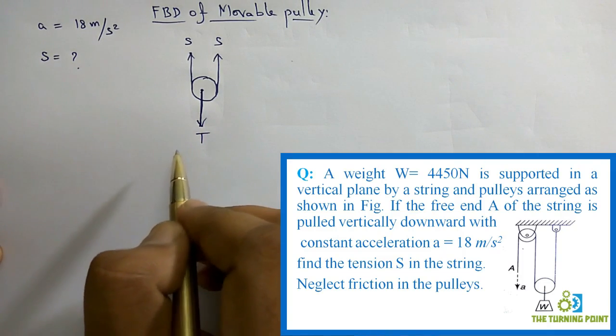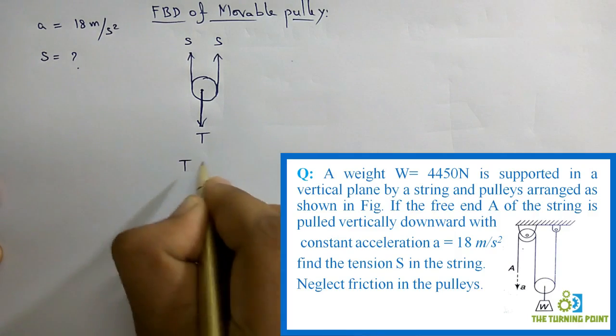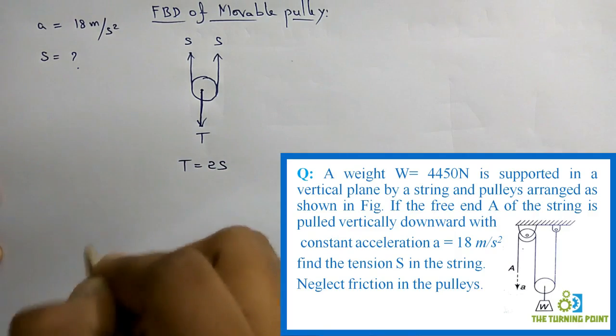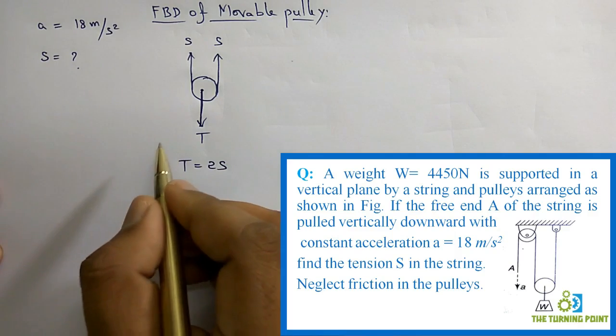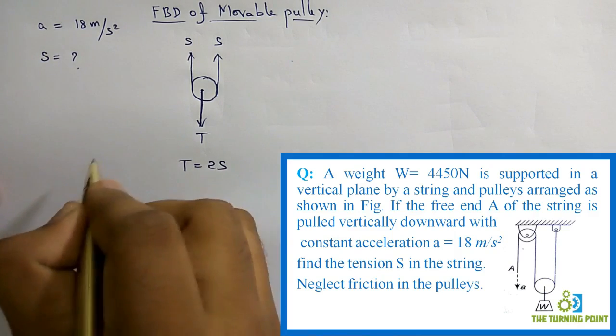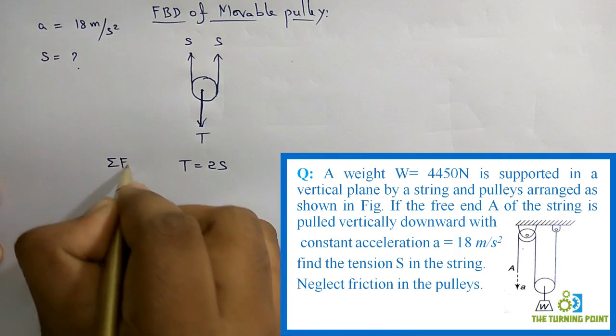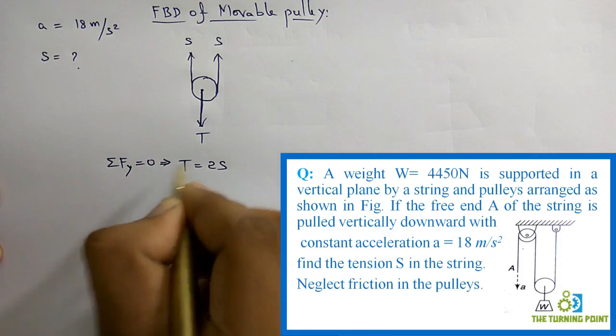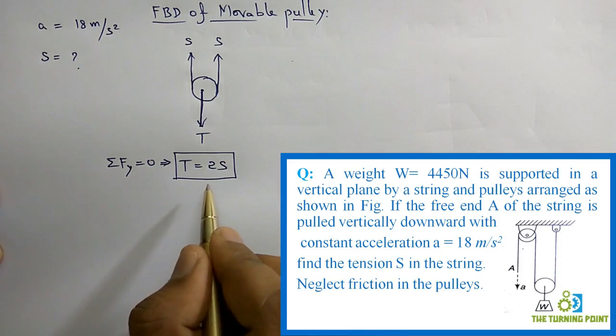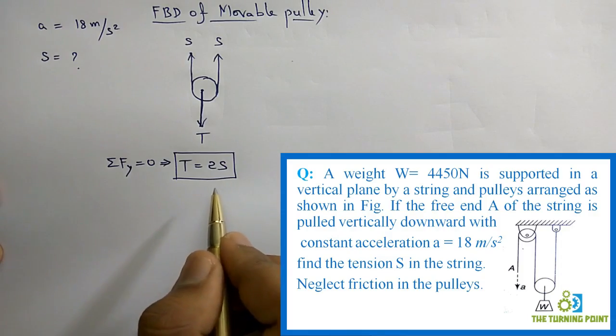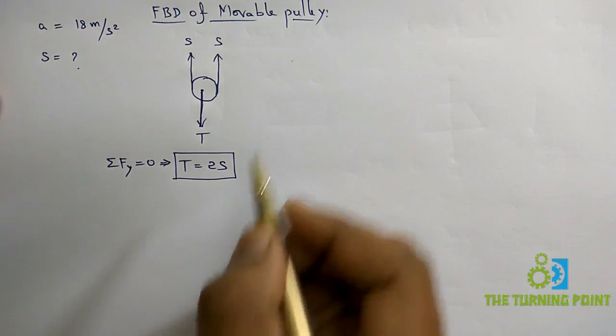This pulley will be under equilibrium when T equals 2S only. When there is no movement along y direction, that means when sigma Fy equals 0 only, it will be under equilibrium. So the condition is T equals 2S, then only the pulley will be under equilibrium.